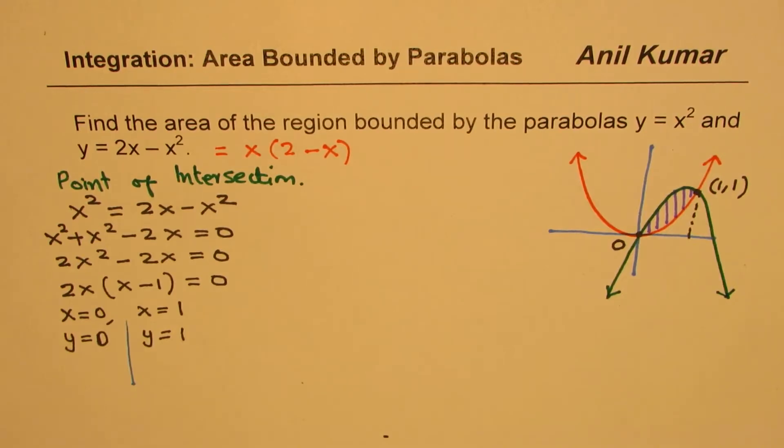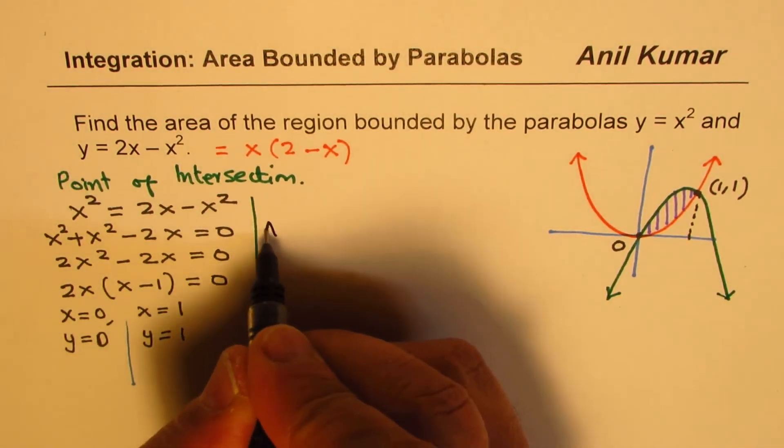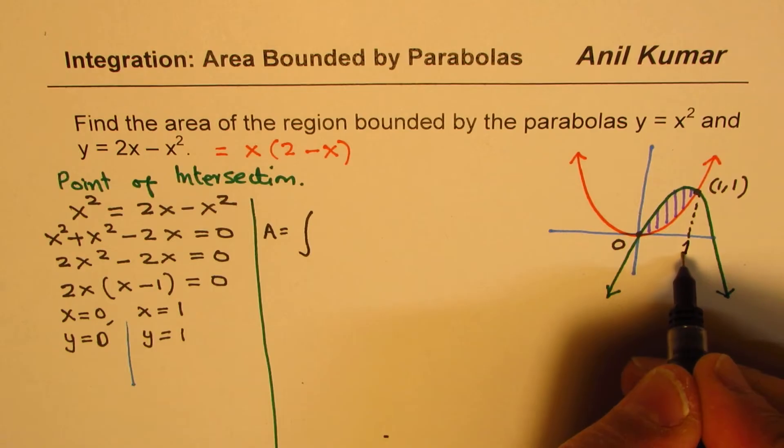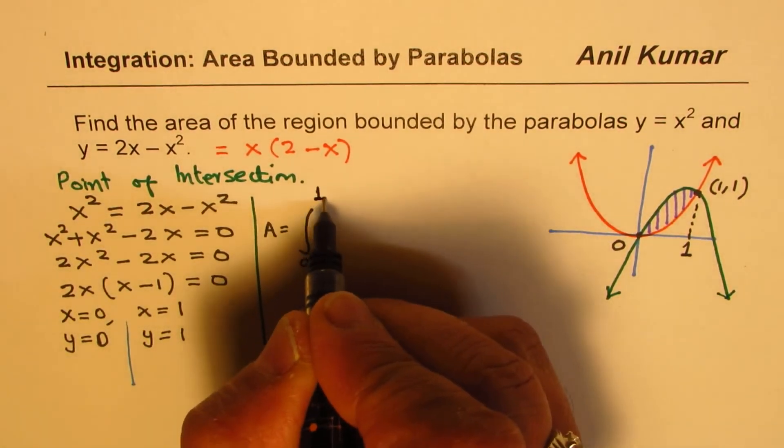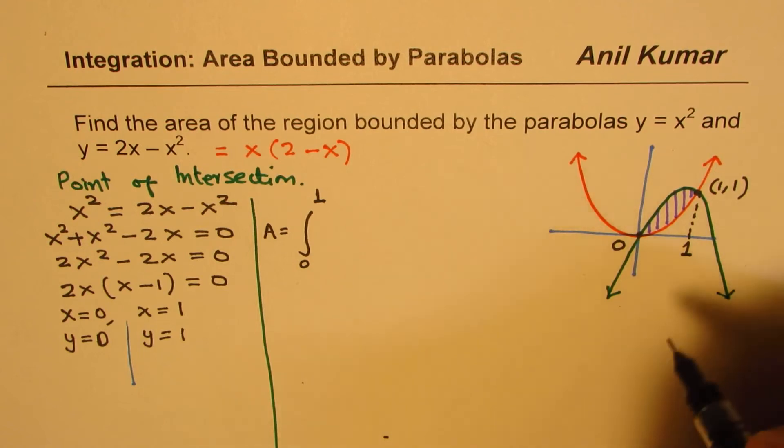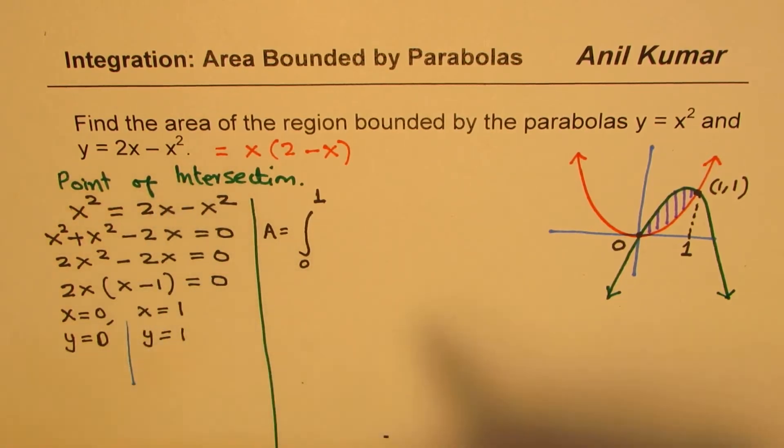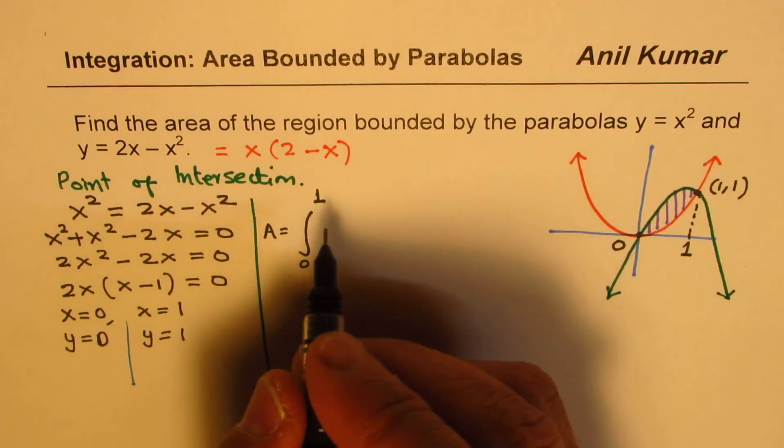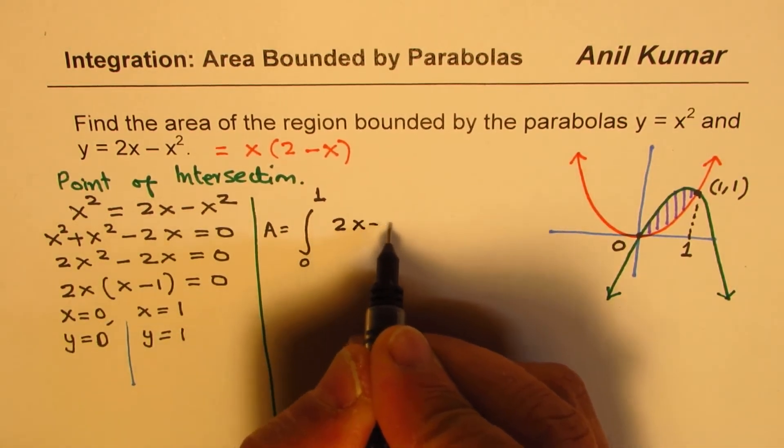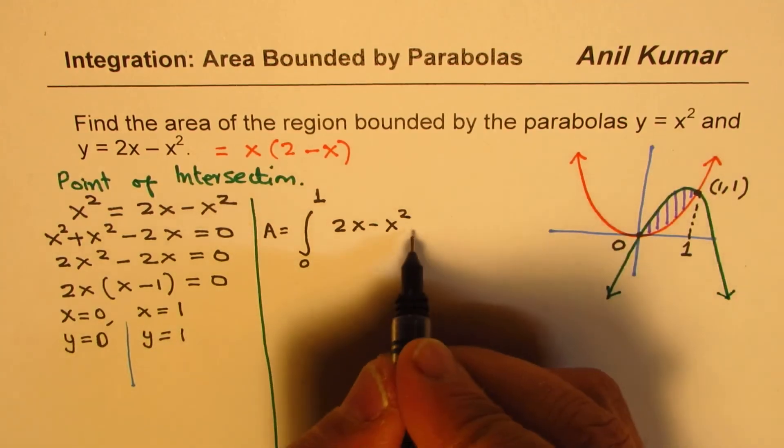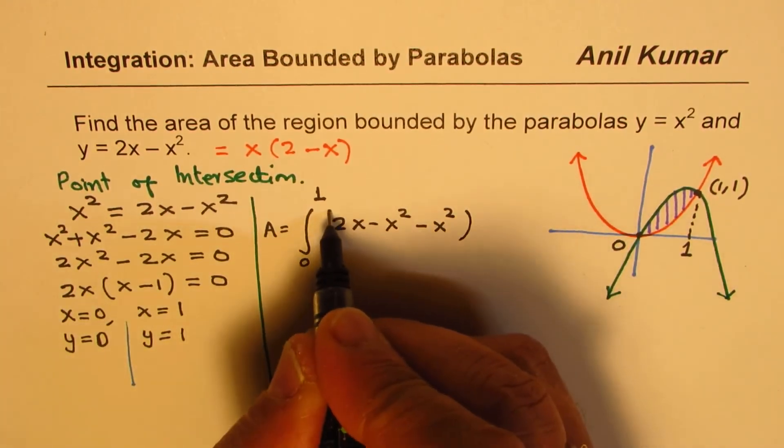Now to find the area, we will actually do the integral. Let's divide this page first. So now we will find the integral from the interval 0 to 1, this is at x equals 1. The parabola on the top is 2x minus x squared. And the other one, which is at the bottom, is x squared. So we will do 2x minus x squared minus x squared dx.